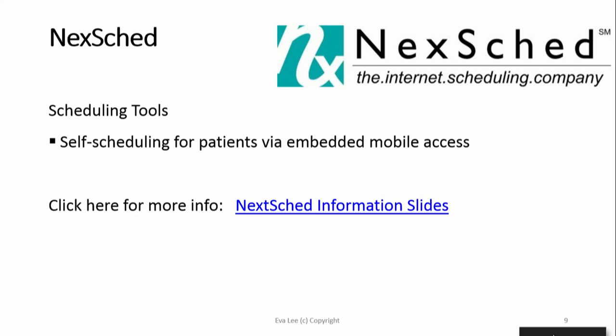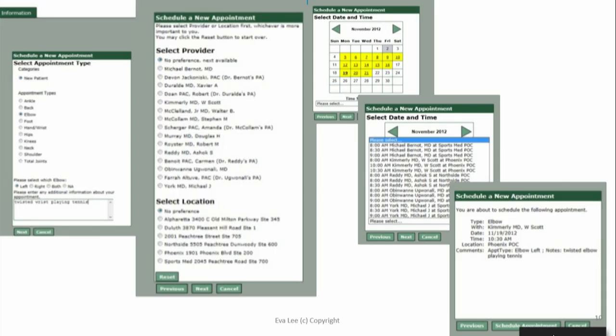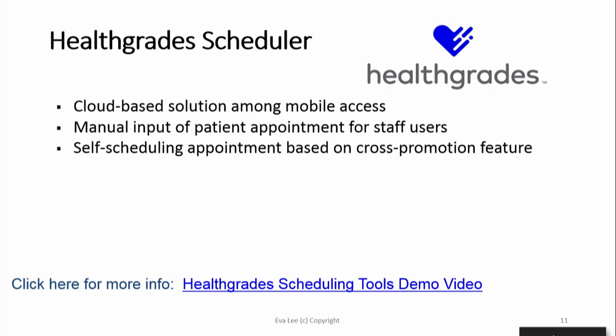A standalone self-scheduling system can use mobile apps. Basically you go in and select a time — exactly like in the old days when you go to a theater and choose an empty seat. You go online, choose the site, the location, the date, and you're assigned a slot. You may also tell the system exactly what your problem is, so the doctors will know when you come in what your medical issues are.